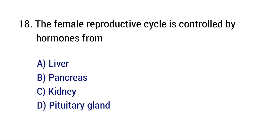Question number 18. The female reproductive cycle is controlled by hormones from? The right answer is option D: Pituitary gland.